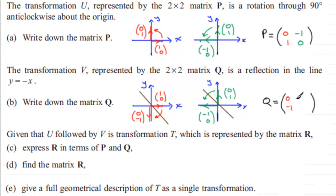All right, now you should be able to do these obviously without necessarily drawing these diagrams. You should be able to see these in your mind I would suspect, but there you go, just a breakdown of how we get those. Okay, now in the next part we're given that U followed by V is a transformation T which is represented by the matrix R, and we've got to express R in terms of P and Q.